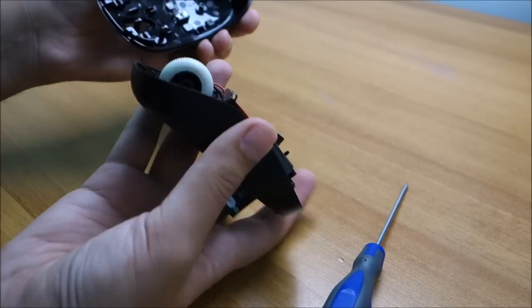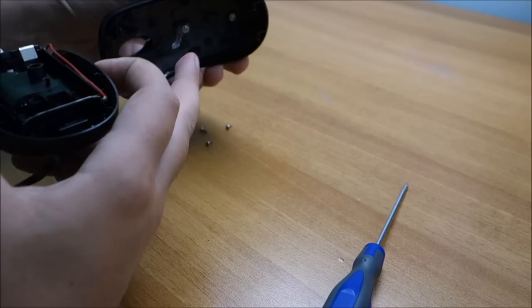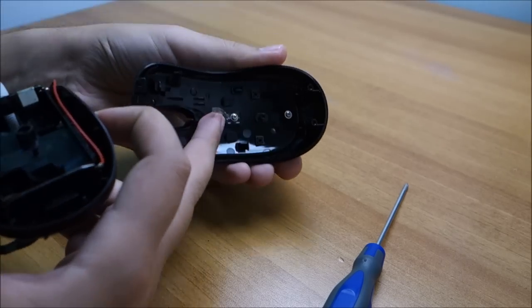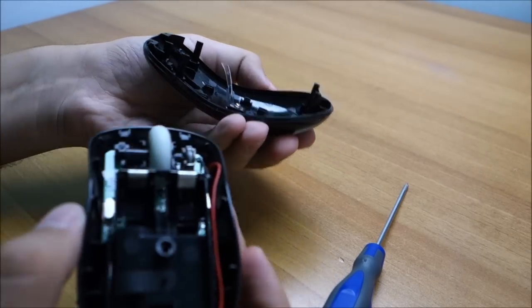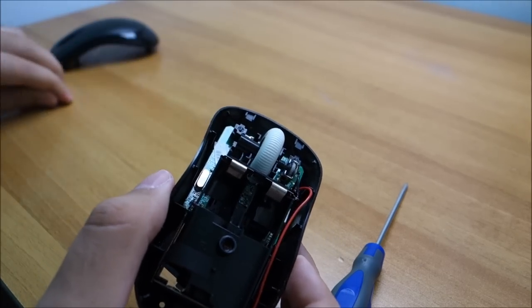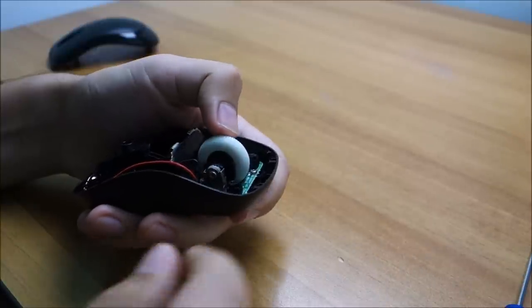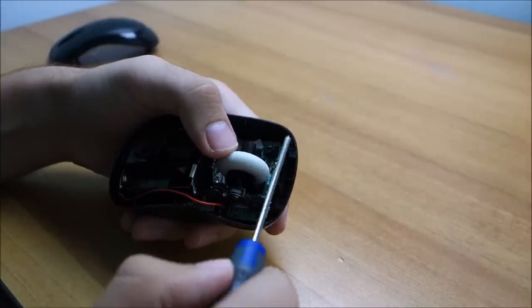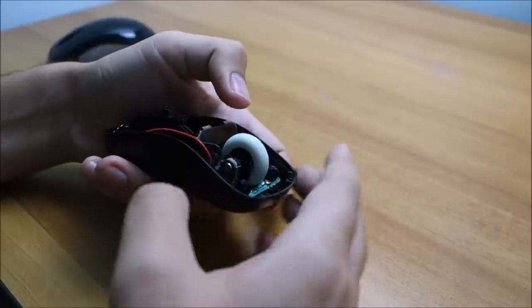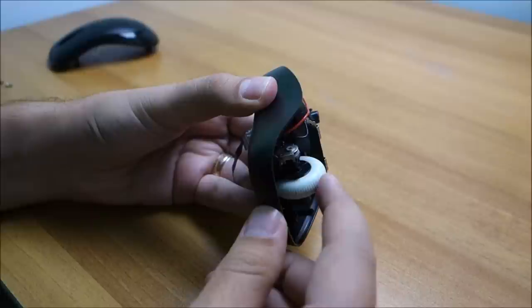Hopefully it doesn't have any more screws, but we will probably see. Okay, it doesn't. So the front is screwless. One screw here for the light pipe. Let me try and figure out what is happening. It's a little bit dirty inside. I will give it a quick clean. Hopefully you can see what's happening here.